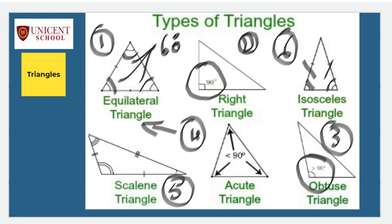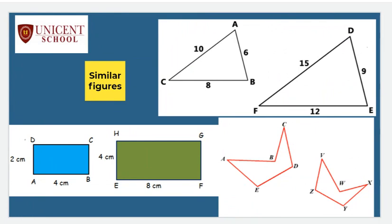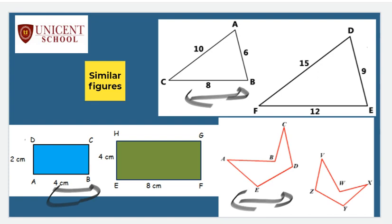Now let us learn about similar figures. Similar figures are figures that look similar - we can compare figures that belong to the same category: two rectangles can be compared, two triangles can be compared, or two closed figures which look similar can be compared. The difference between similar figures is in their measurements - the sides, lengths, or breadth measure differently. When these measurements are exactly the same, we say the figures are congruent.